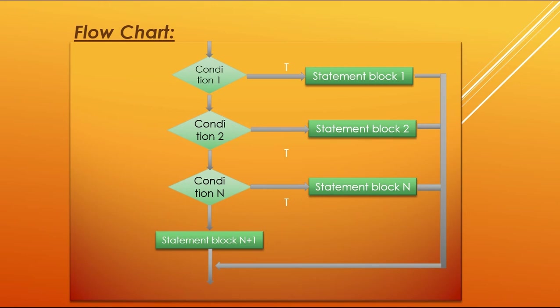The test conditions in an if-else-if statement with multiple alternates are executed in sequence until a true condition is reached. If a condition is true, the block of statements following it is executed and the remaining blocks are skipped. If a condition is false, that block is skipped. The statement after the last else is executed if all conditions are false.